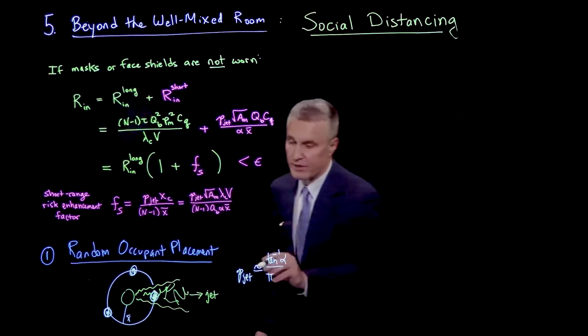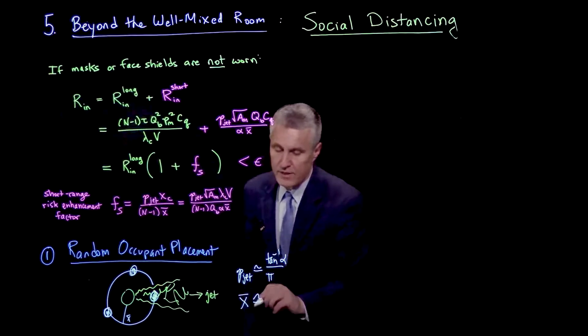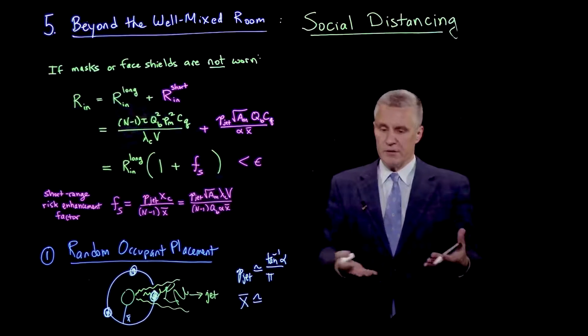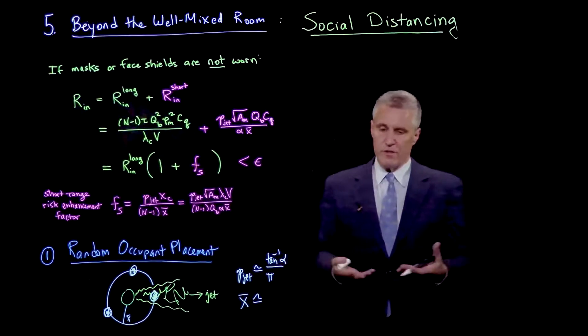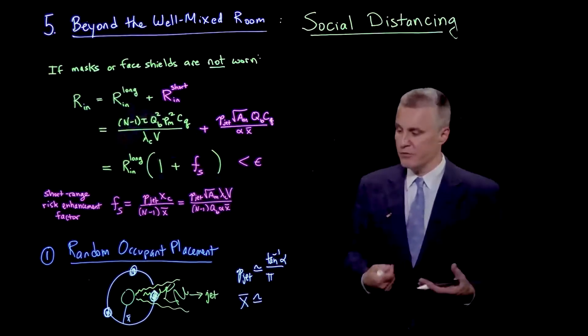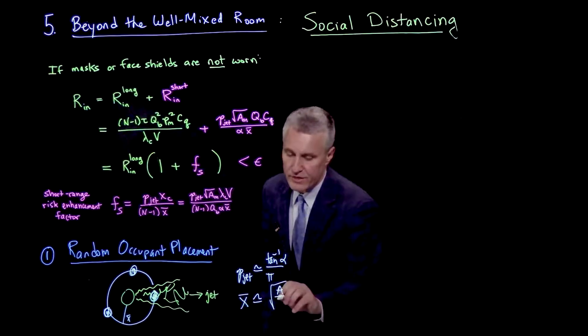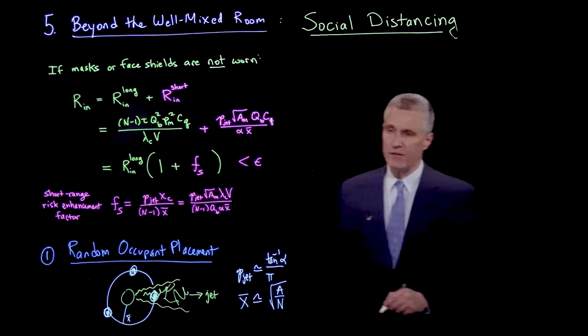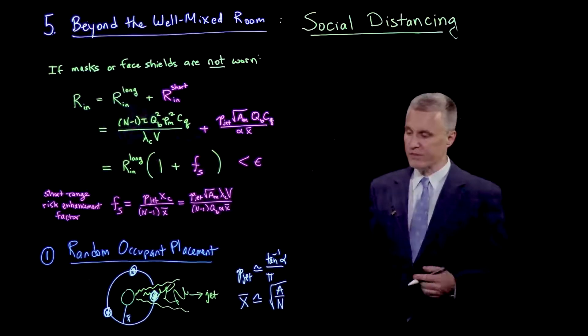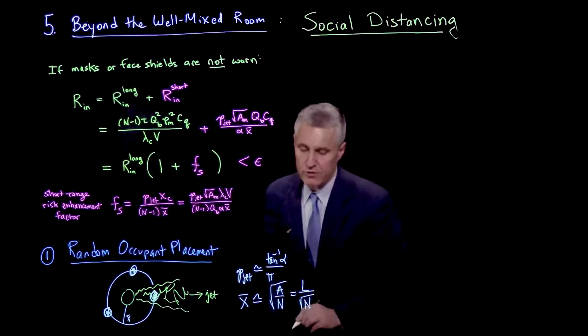Alpha, remember, is the entrainment factor, the slope of this line defining the cone of the respiratory jet. If it's completely random, if we just imagine lots of people scattered throughout a room, in a busy space like a bar or nightclub, a place where it's somewhat crowded, we might have an average social distance which is the area of the room divided by n, the area per person, and then take a square root. The square root of area is the length l of the room divided by square root of n.